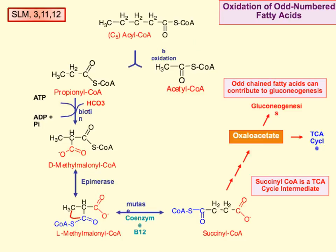So, for example, if it was 9 carbons, it would go through beta-oxidation and remove 2, then go through beta-oxidation again and remove 2 more, and then you get down to this 5-carbon acyl-CoA. This 5-carbon acyl-CoA will undergo beta-oxidation to produce acetyl-CoA and propionyl-CoA.